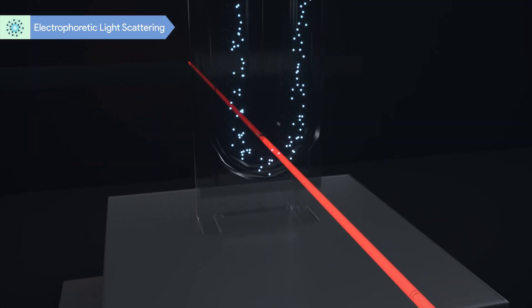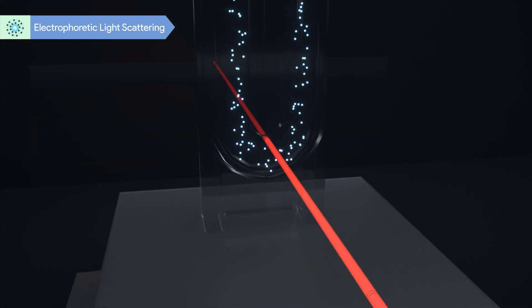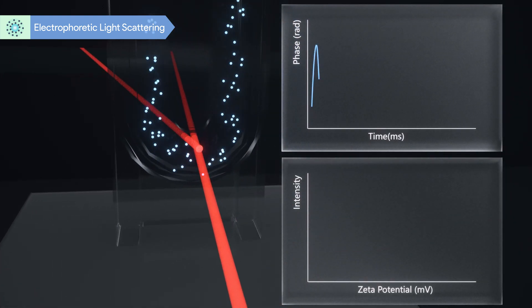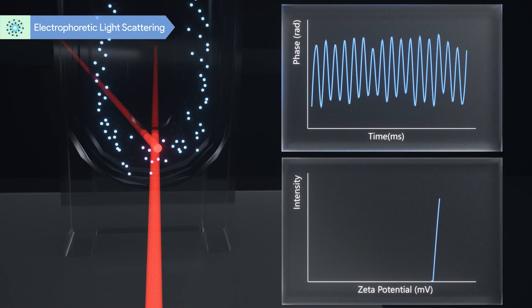ELS measures the frequency shift of the scattered light due to the optical Doppler effect caused by particles experiencing electrophoretic movement in an electric field and offers zeta potential and stability information of samples. B-Nano adopts the most accurate ELS signal analytical algorithm, phase analysis light scattering, known as PALS technology.